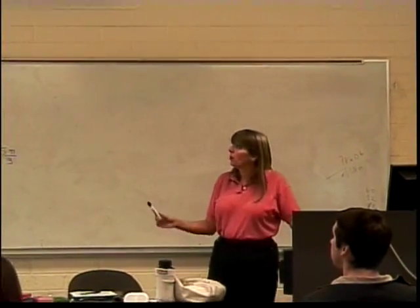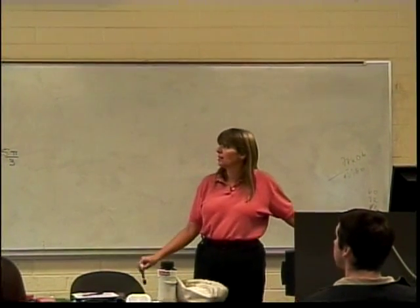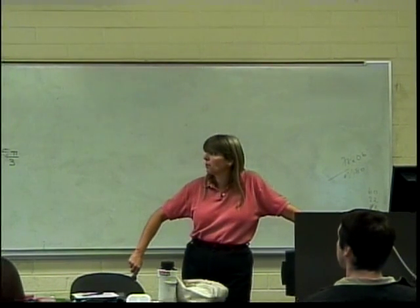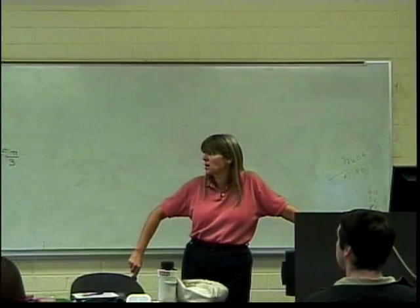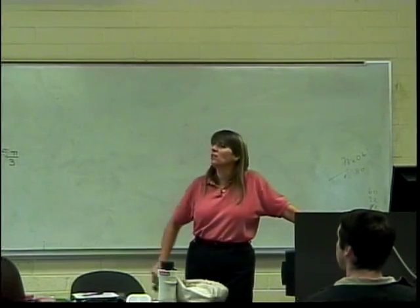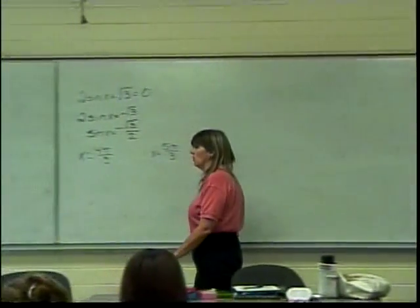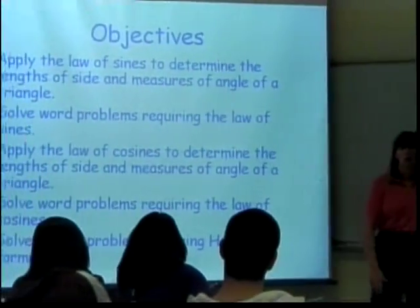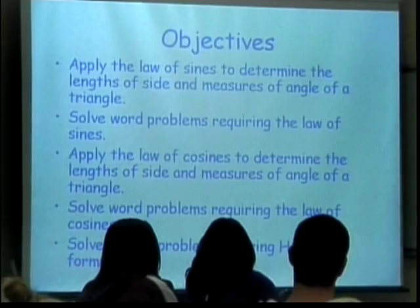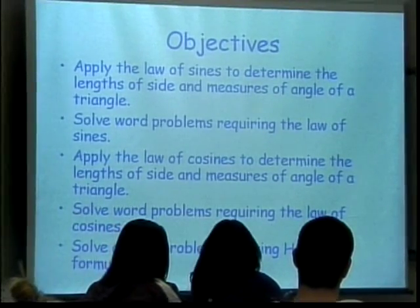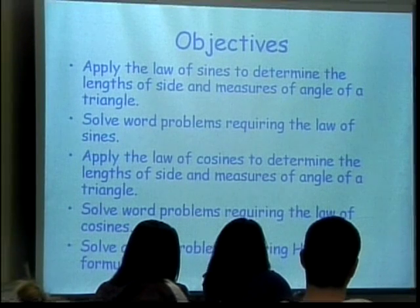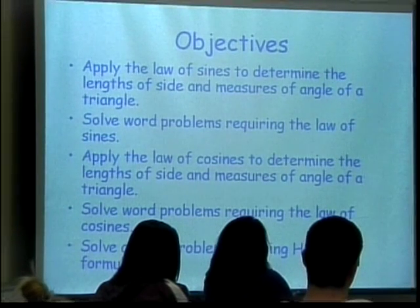We are going to apply the Law of Sines to determine the lengths and sides of the angles. Word problems are going to come up. Law of Cosines is going to do the same thing, more word problems. And then there's one weird formula that they stick in here, related to triangles, it's called Heron's Formula. How many of you have ever heard of Heron's Formula before? Heron's Formula is a way to find an area of a triangle that you don't have a height for, but only have the lengths of the three sides.